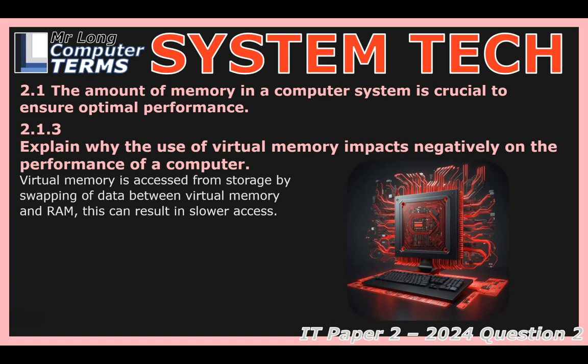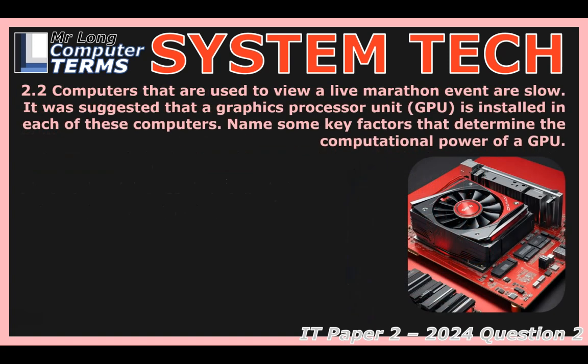Another fix for slow computers is installing a GPU — a graphics processing unit. What makes a GPU so powerful? A GPU's power comes from a combination of factors working together. People might think about clock speed, but the real difference maker, especially these days, is often the number of cores and the memory bandwidth.